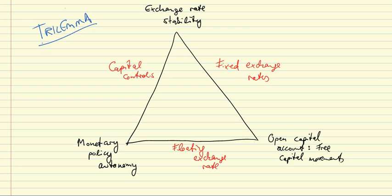This diagram helps illustrate the trilemma. First, any economy principally would like to have exchange rate stability, so that there are not violent fluctuations in the value of its currency vis-à-vis other currencies. An economy would also like to benefit from free capital movements, meaning that residents of the country can invest in other countries, and that residents of other countries can bring capital into the home country — open a factory or buy stock in a company.